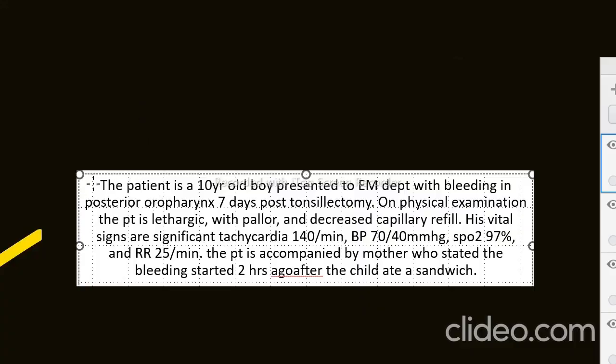Let's look at this history. The patient is a 10-year-old boy presented to the emergency department with bleeding in posterior oropharynx seven days post-tonsillectomy. On physical examination, the patient is lethargic with pallor and decreased capillary refill. Vitals are heart rate 140 per minute, BP 70 by 40, oxygen saturation 97%, respiratory rate 25 per minute. The patient is accompanied by mother who stated the bleeding started two hours after the child ate a sandwich.